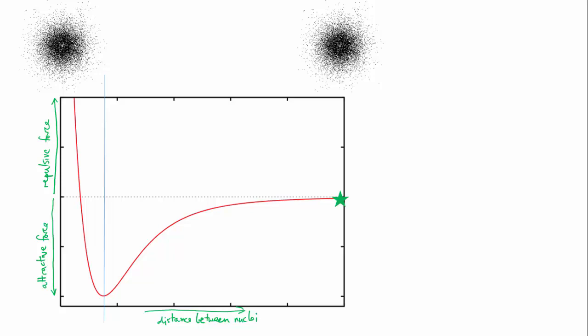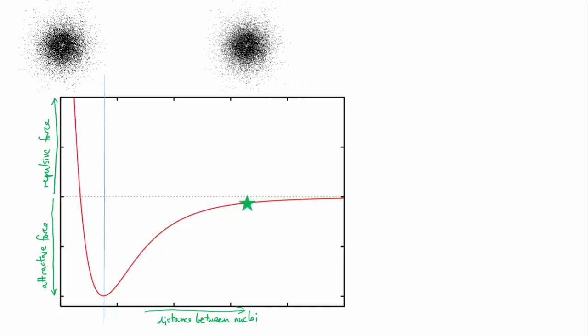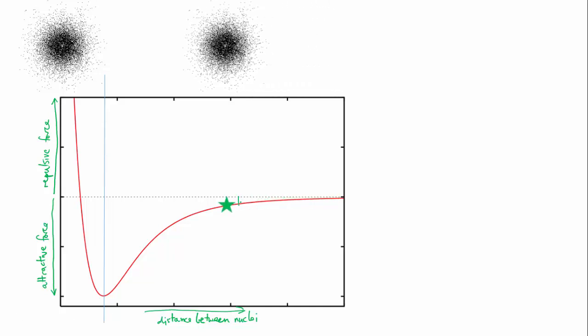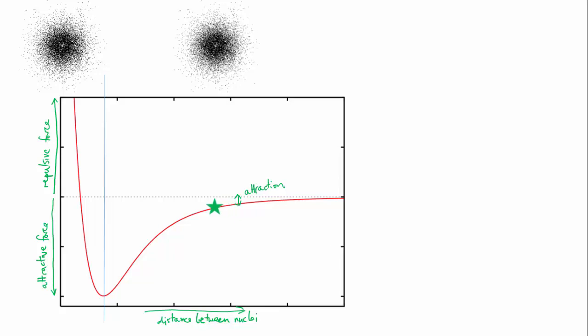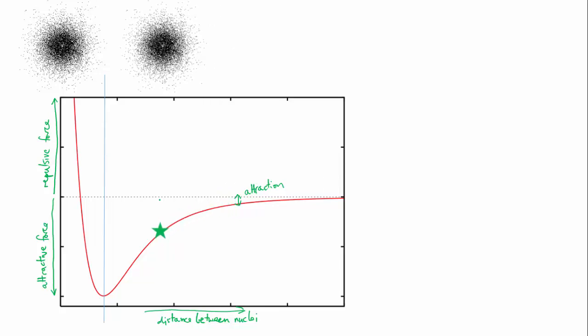If we bring them closer, the nucleus of each atom starts to interact with the electric field from the electrons of the other atom. A slight attraction is experienced. This pulls the atom in closer, and the attraction grows. You can see our line is dropping further below the middle of the graph.